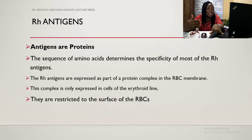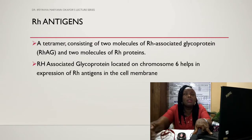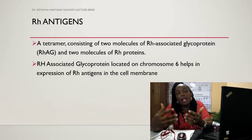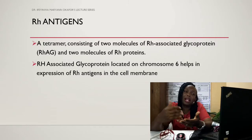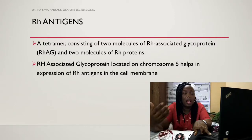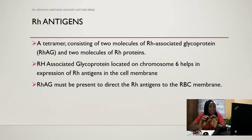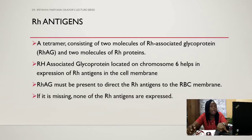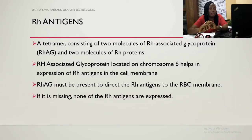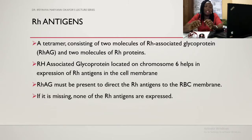The polymorphism involving RHD most commonly arises from deletion of the entire RHD gene, while that involving big C/little c is due to single nucleotide polymorphism causing amino acid change, and big E involves a single nucleotide polymorphism causing a single amino acid change. This is the basis of the clinical significance of RHD. Between RHD and RHCE you have up to 30 to 35 amino acid differences, making this system highly polymorphic with many phenotypes. RH antigens are proteins, and the sequence of amino acids determines the specificity of most of these RH antigens. They are expressed as part of a protein complex in the red blood cell membrane.